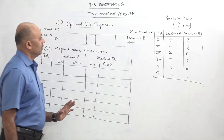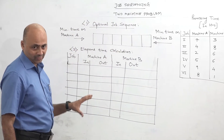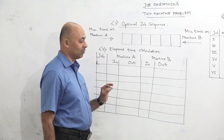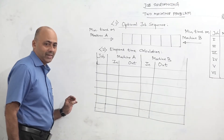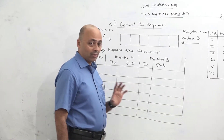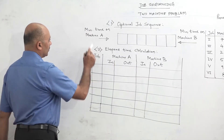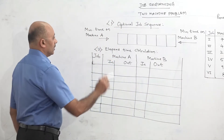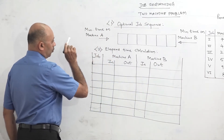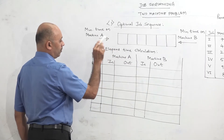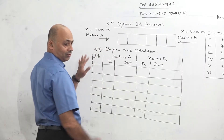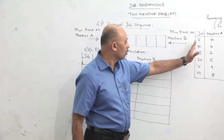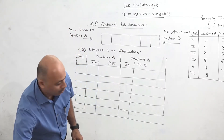Step one of the solution is to find the optimal job sequence — the sequence which minimizes total processing time of all the jobs. The rule of allocation is: we have made six boxes because there are six jobs. If the minimum time of any job is on machine A, then we give allocation from the left hand side. If the minimum time is on machine B, then we give the allocation from the right hand side.